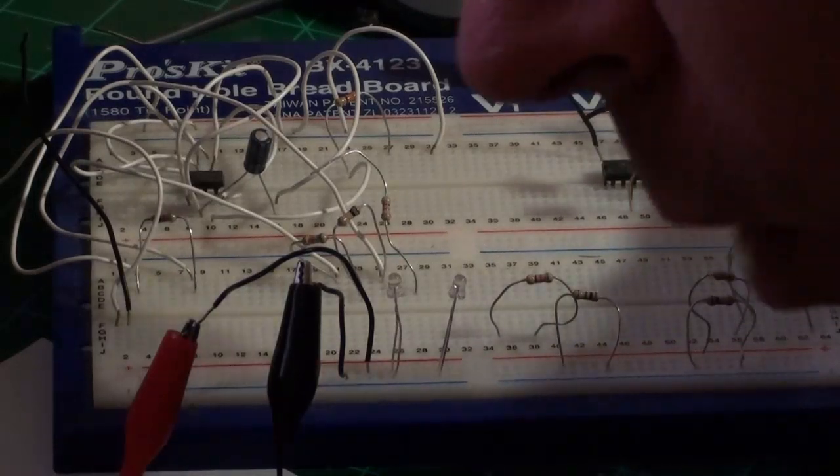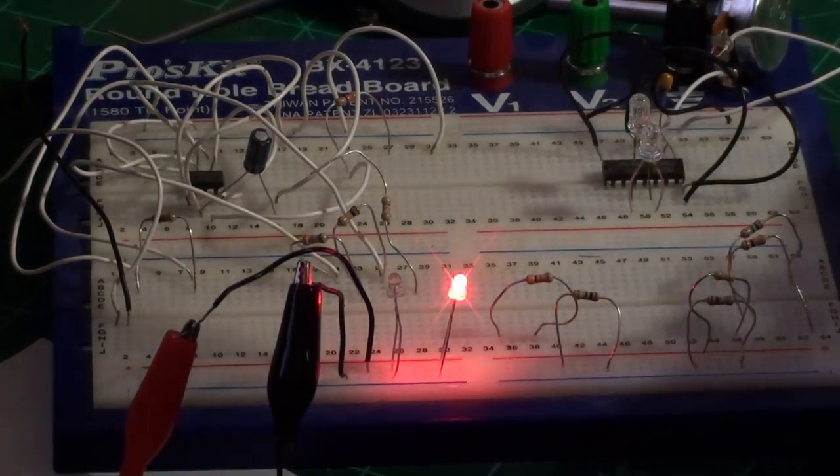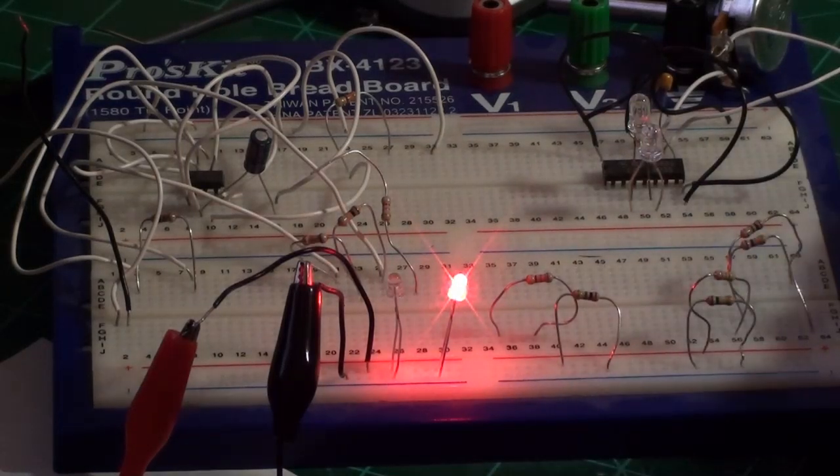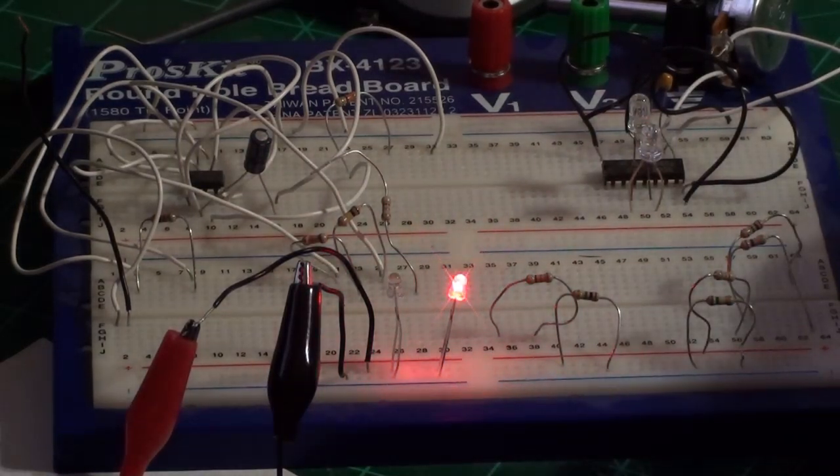So let's go to, we're at one volt right now. There's two. The red one's lighting up. 2.1, 2.2. You can see it's getting brighter each time up the voltage.